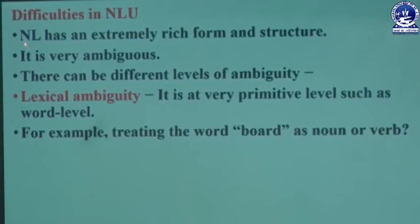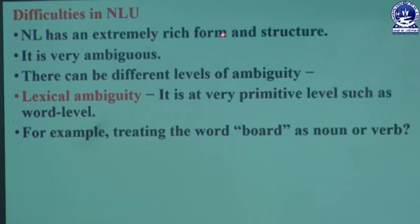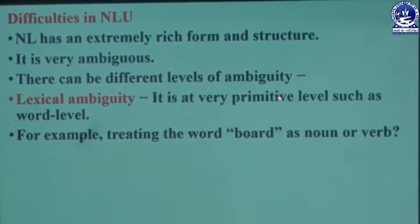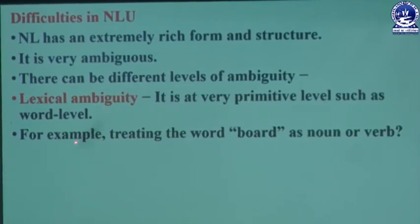NLU has an extremely rich form and structure, and it is very ambiguous. Natural language is a rich form with rich structure and always contains some ambiguity. The first level of ambiguity is lexical ambiguity, which is at a very primitive level — word-level ambiguity. For example, treating the word 'board' as a noun or a verb. When you consider whether a word is a noun or a verb, that word creates ambiguity, which is called lexical ambiguity.